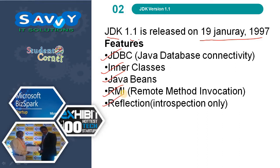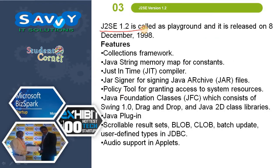Java 1.2 is called Playground and it is released on 8th December 1998. The features are Collections Framework, Java String Memory Map for constants, Just-In-Time (JIT) Compiler, JAR, JAR Signer for signing Java JAR files, Policy Tool for granting access to system resources, Java Foundation Classes (JFC) which consists of Swing 1.0, Drag and Drop and Java 2D class libraries, Java Plugin, Scrollable Result Sets, BLOB, CLOB, Batch Update, User Defined Types in JDBC, and Audio Support in Applets.